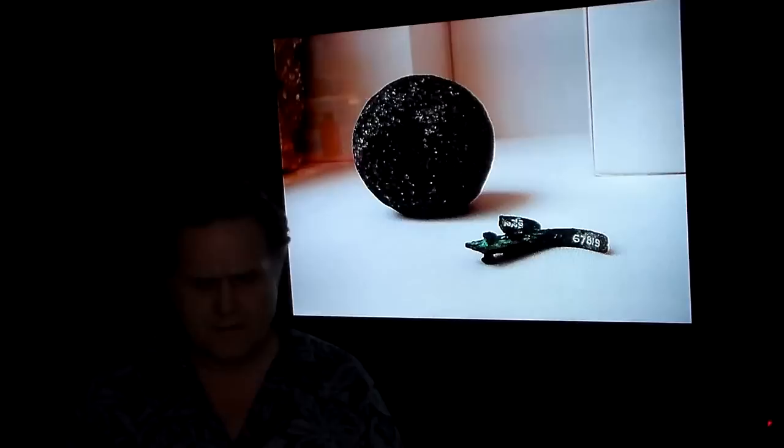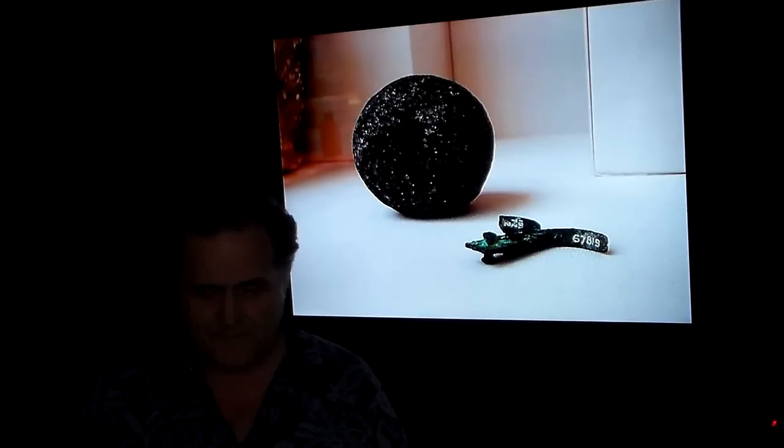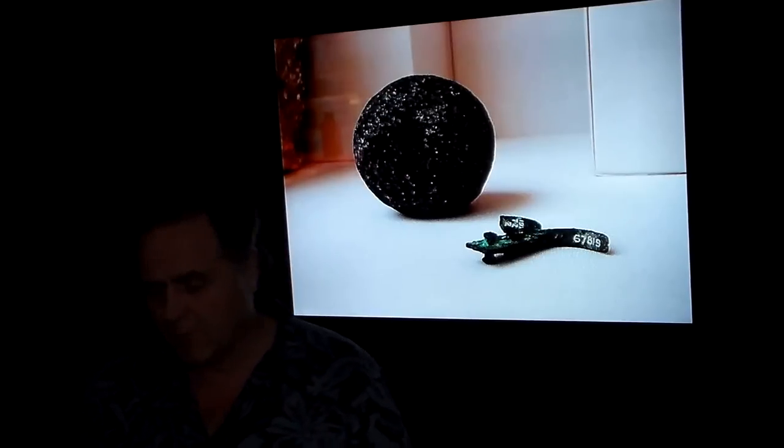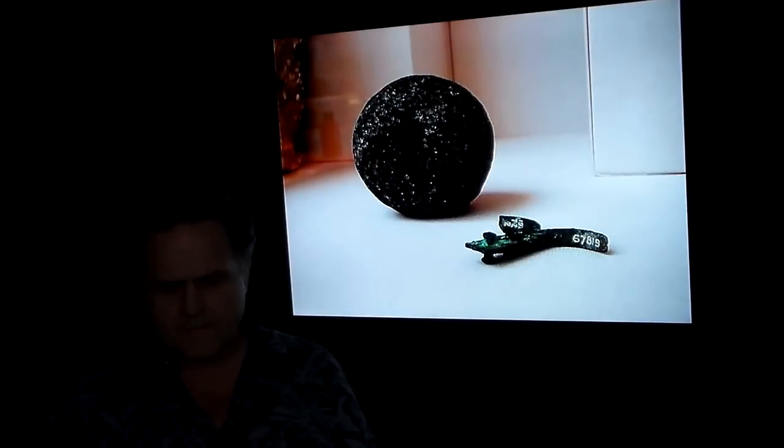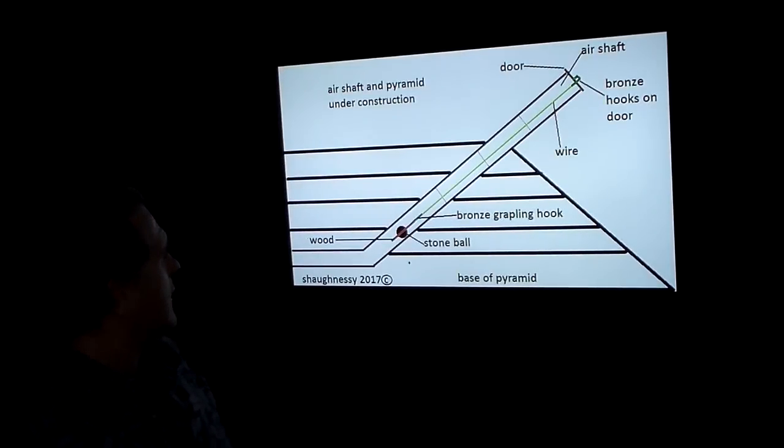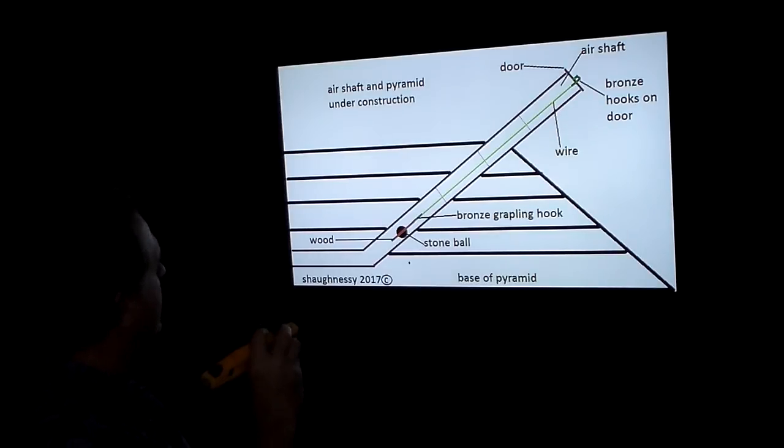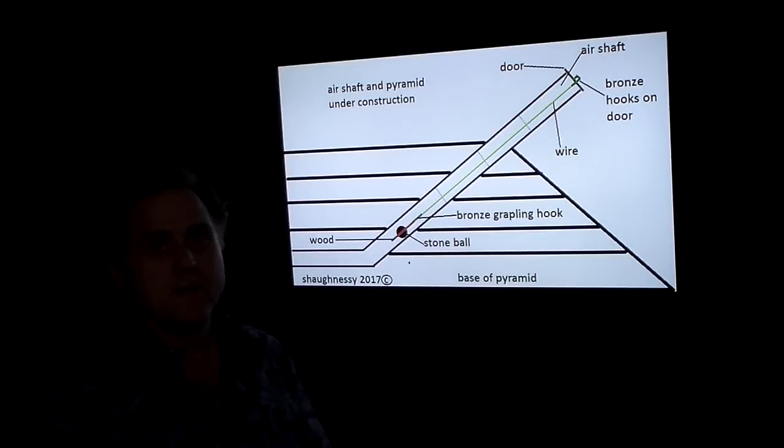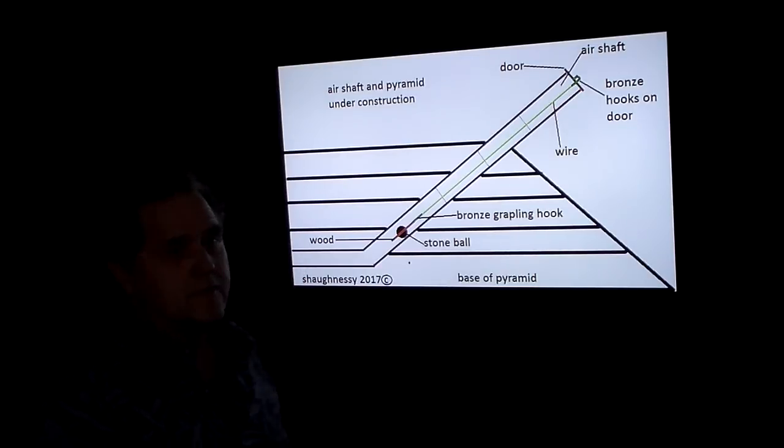There's the grappling hook. We're all on board—we see the door with the two holes in it. Now the way they built the shafts, they had to build the shaft before the next course of the pyramid could come in.